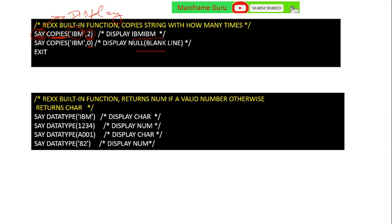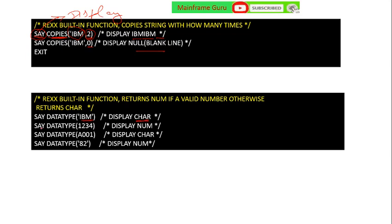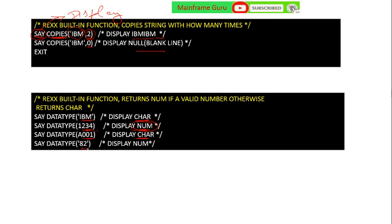The next REXX built-in function is DATATYPE. It returns NUM if a valid number, otherwise returns CHAR. For example, SAY DATATYPE('IBM') — it is in quotes, so it will display CHAR. SAY DATATYPE(1234) — it is a number so it will display NUM. SAY DATATYPE('A001') will display CHAR, and SAY DATATYPE('A2') will display NUM.